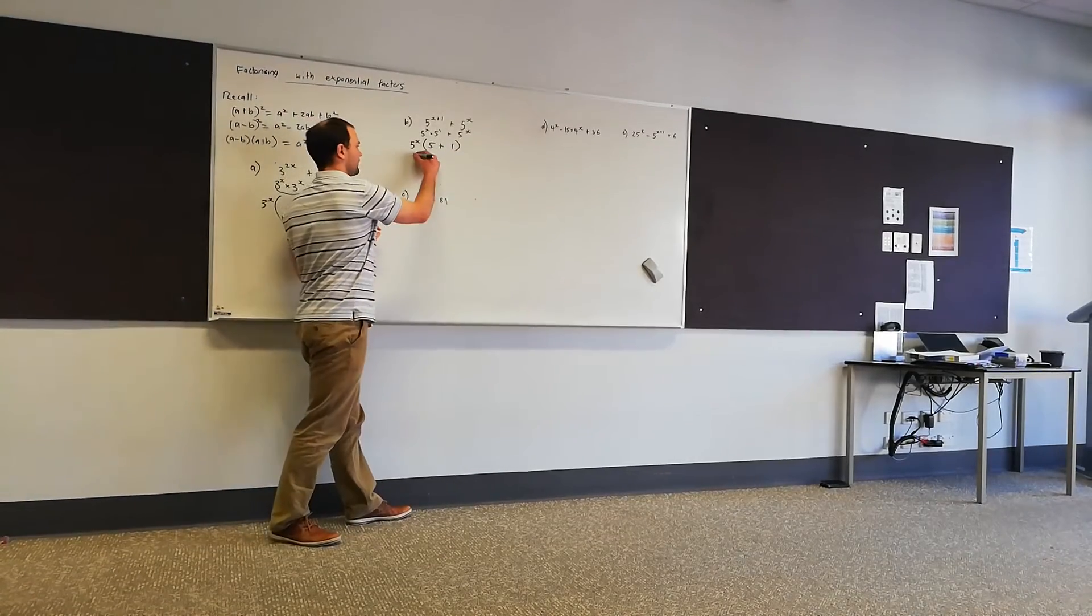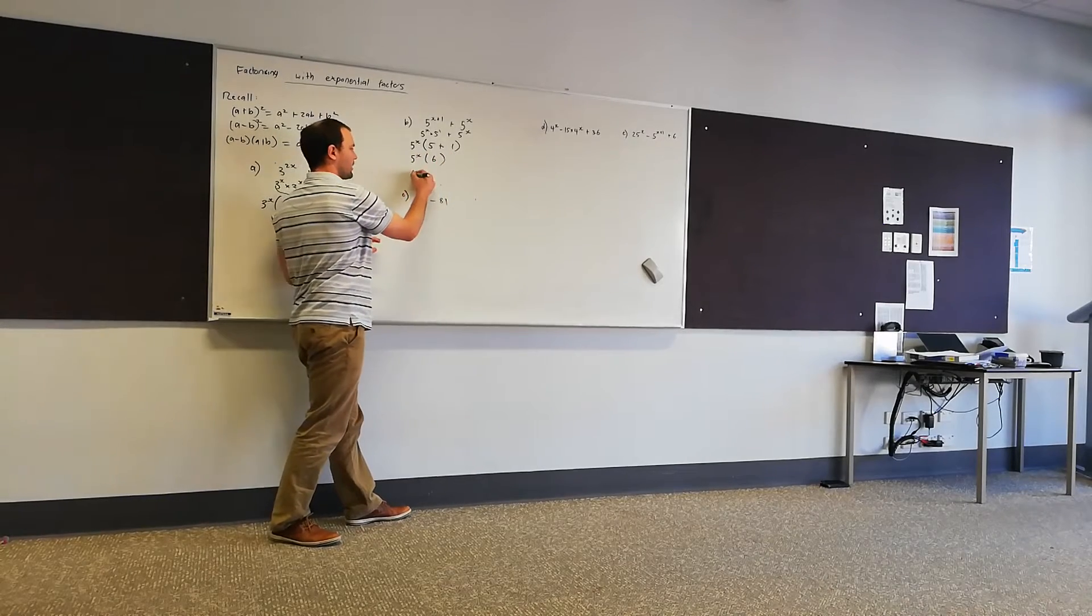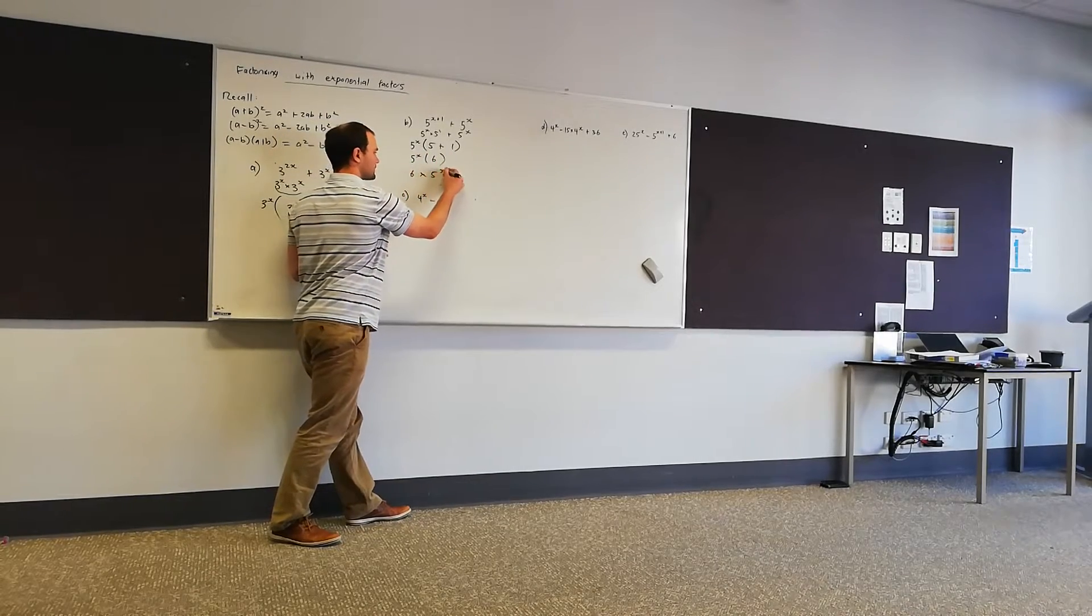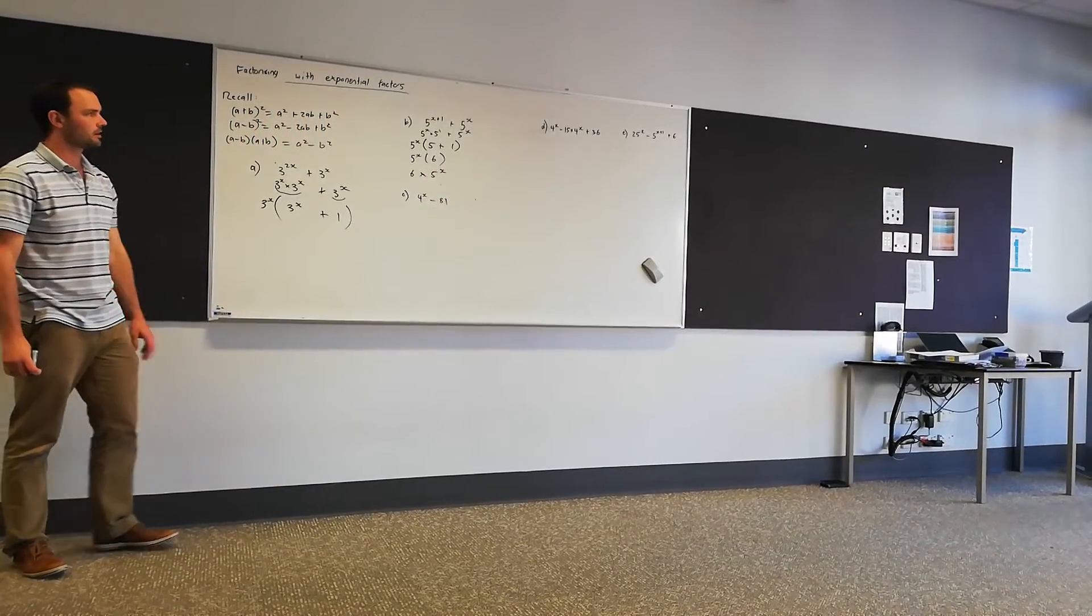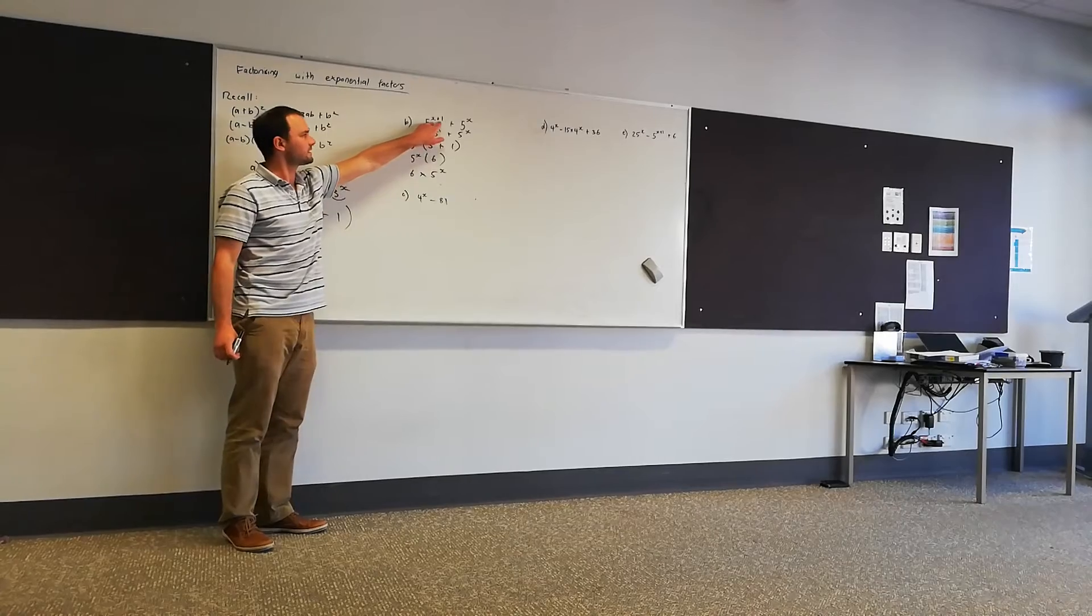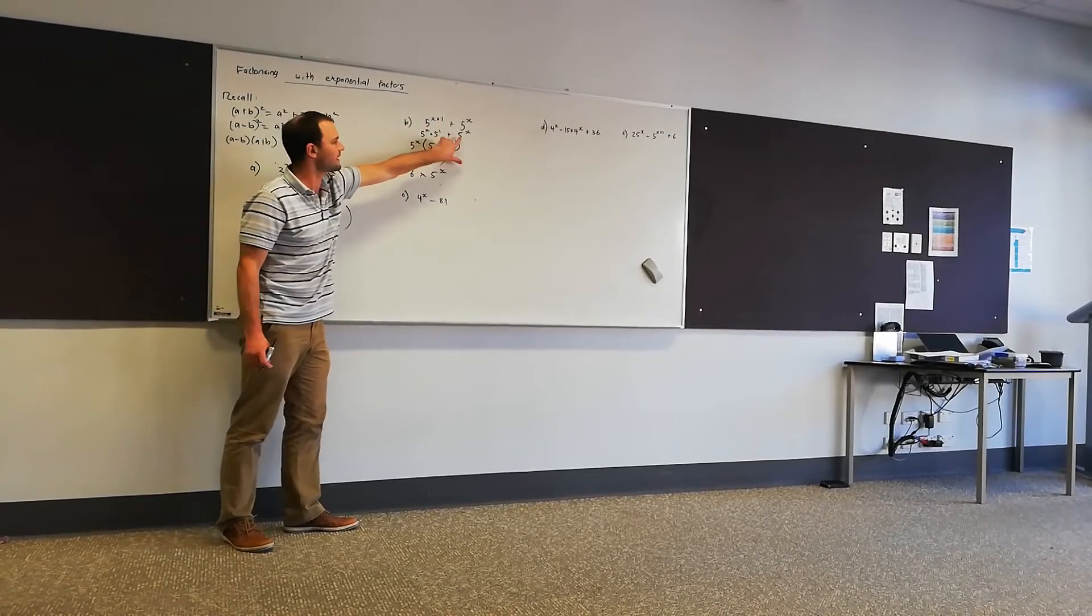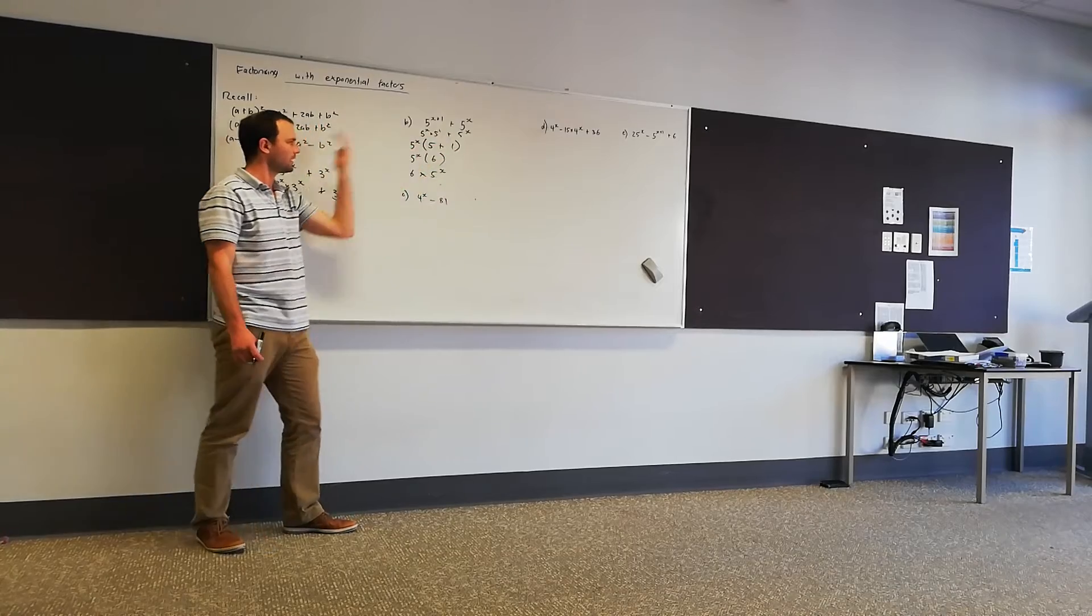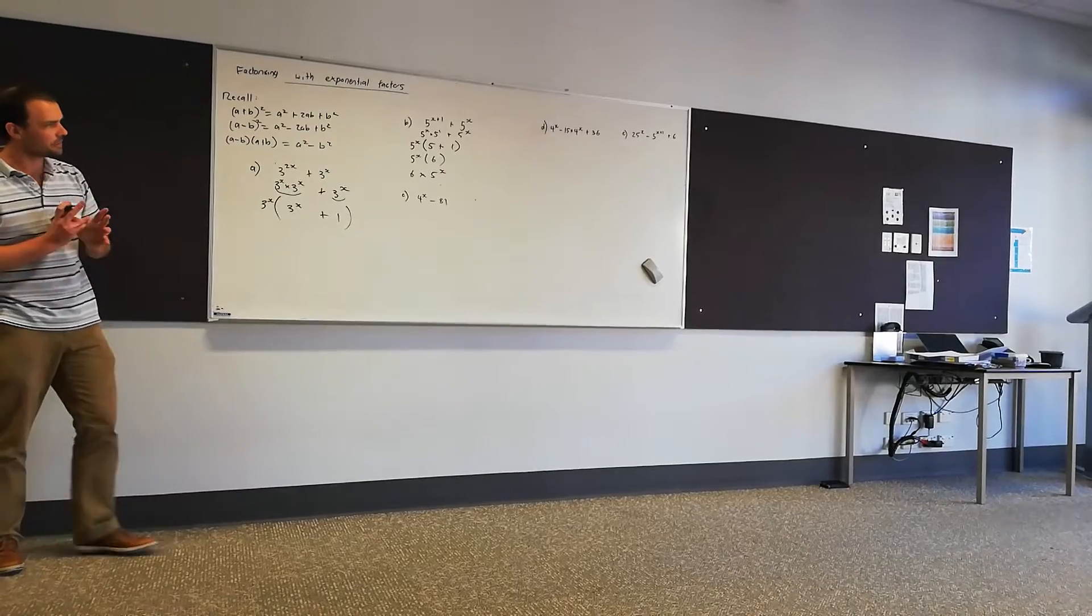Okay, and so 5 plus 1 is 6, so what we've got is 5^x in brackets 6, and the technically correct way of writing this is that we've got 6 lots of 5^x. Okay, so what are we doing? We split the index law here, we recognize 5^x is common to this term and this term, we pull it out the front and then we simplify it. Okay, let's move on to c.